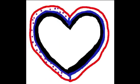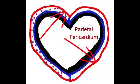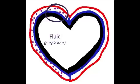The visceral pericardium turns and folds back on itself, forming an outer layer — that's the parietal pericardium. Between the visceral and the parietal layers is fluid, and because it's around the heart, we call it pericardial fluid.